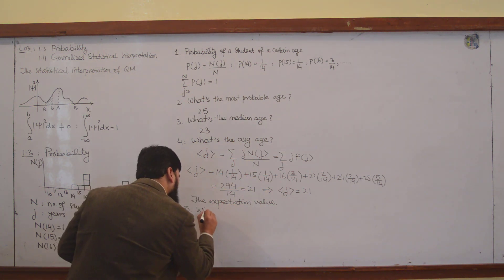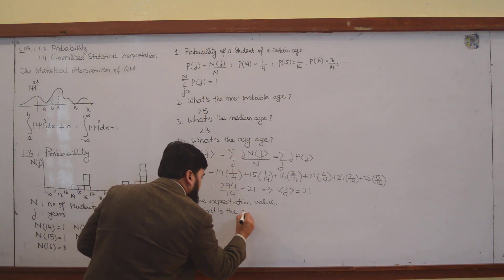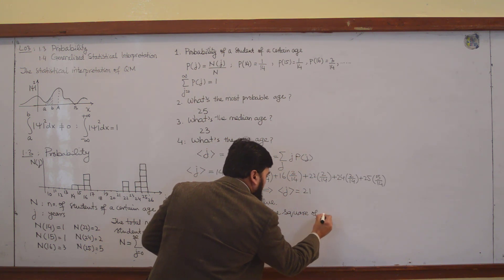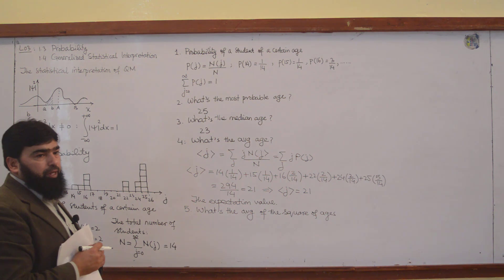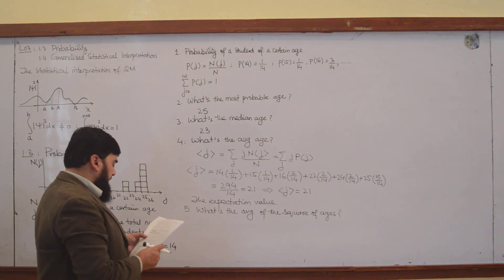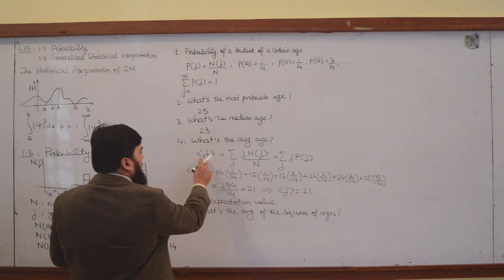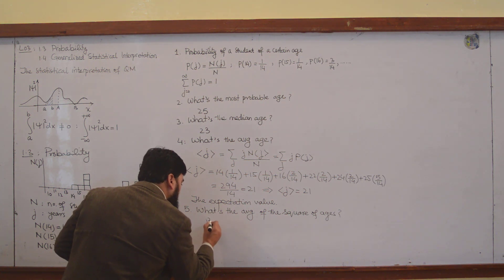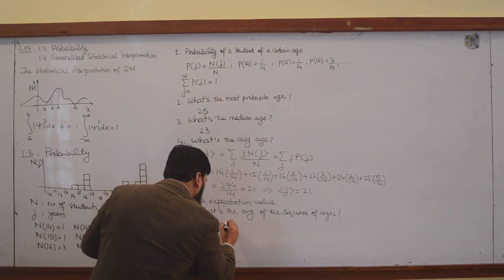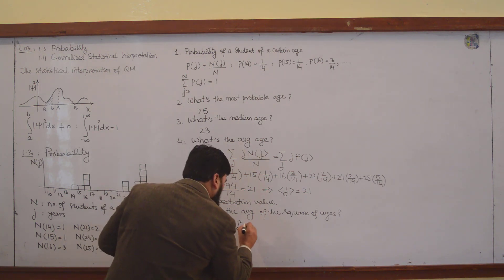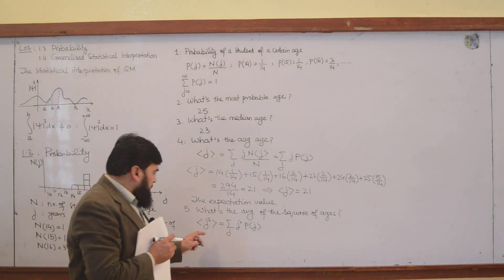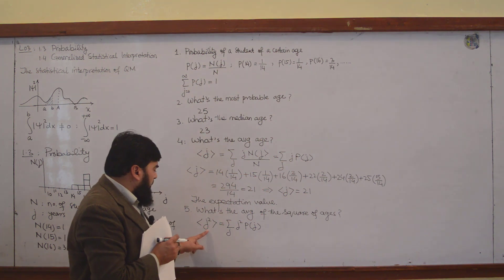What is the average of the square of ages, and why is this necessary? You will come to know in a while that this is also really necessary. The square of the ages will be worked out as j², and average means the sum, so this will be equal to j² times P(j).